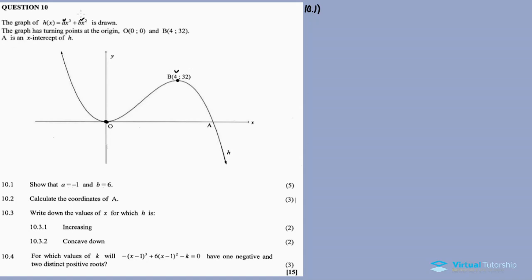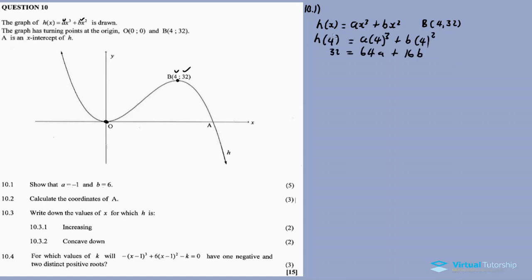If I substitute the coordinates of B into h of x, I should get 32. After substituting x equals 4: 4 cubed is 64, so we get 64a. Then 4 squared is 16, so 16b. Therefore equation number one is: 32 equals 64a plus 16b.